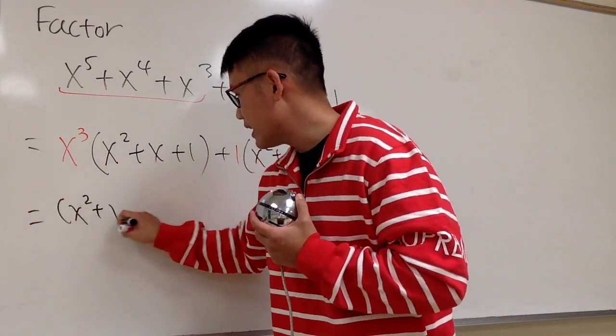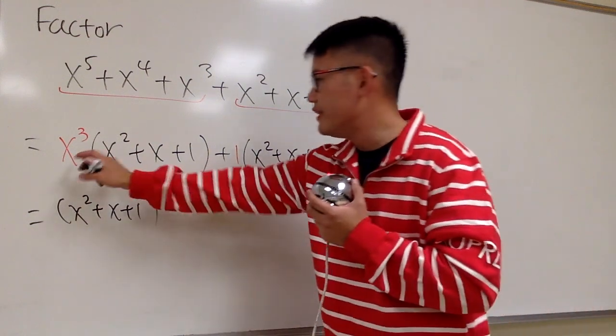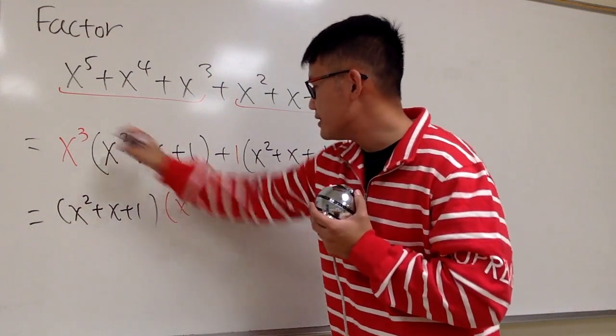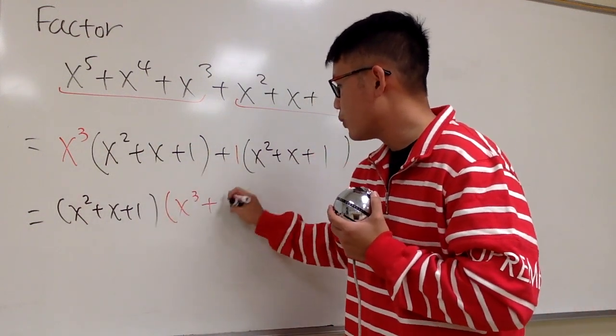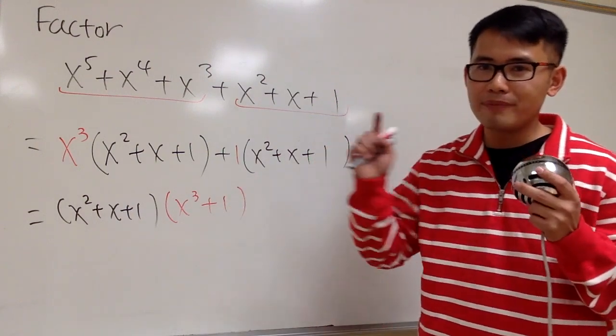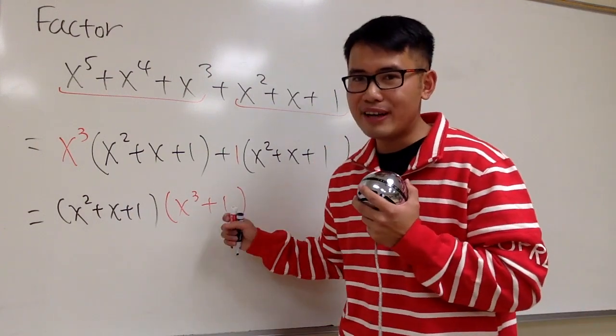x squared plus x plus one. Left over, this and that: x to the third power plus one. Are we done? No, because we can factor this.